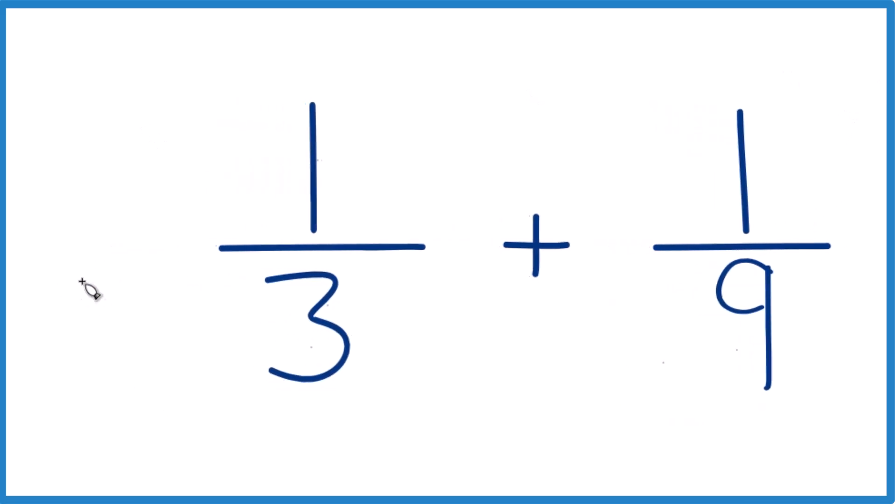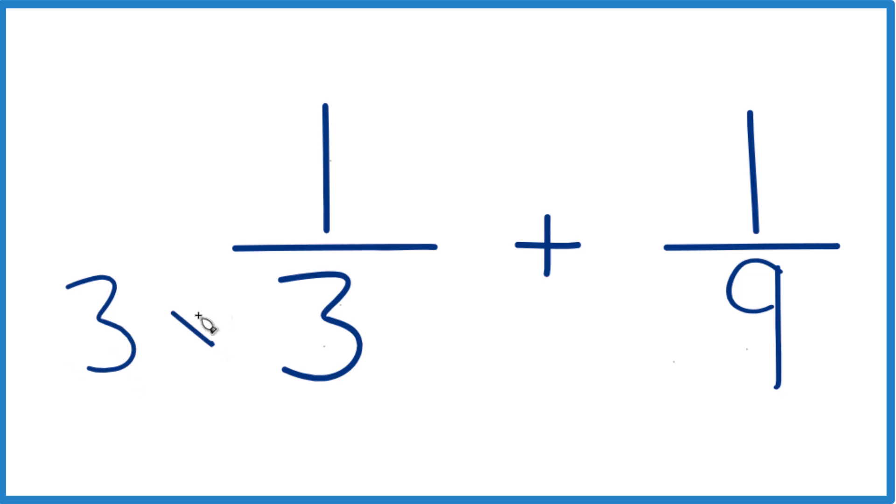In this case, why don't we take 3 times 3 because that equals 9. We have 9 here. We can't just multiply the denominator by 3, though. We do need to also multiply the numerator by 3.